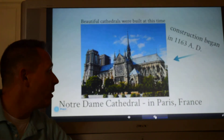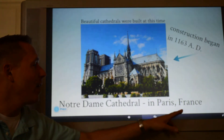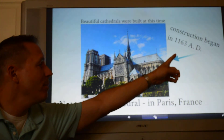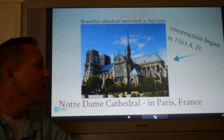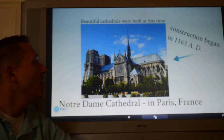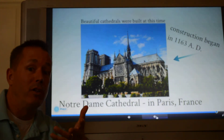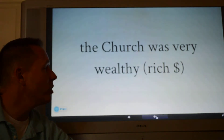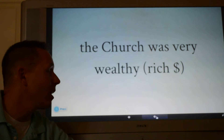This is the time in the Middle Ages where they built these beautiful cathedrals. This is Notre Dame Cathedral in Paris, France — construction began in 1163 AD, about the beginning of the high Middle Ages. You probably recognize the name Notre Dame from the movie The Hunchback of Notre Dame, which took place at that cathedral. The church was also very wealthy — they had a lot of money and therefore a lot of power.